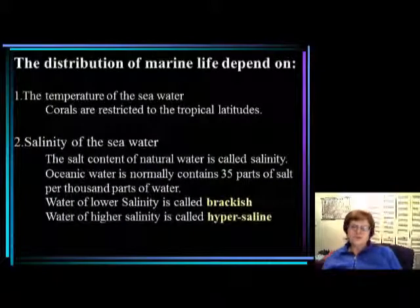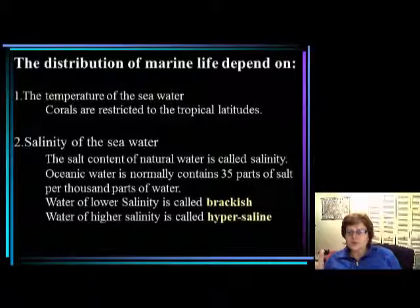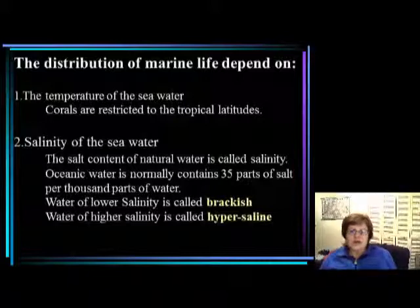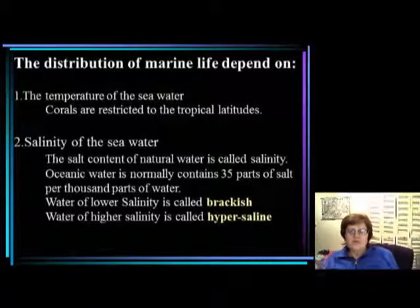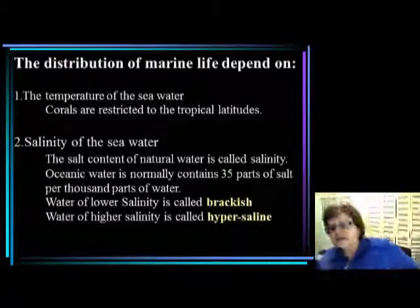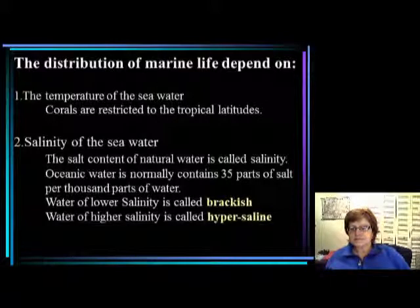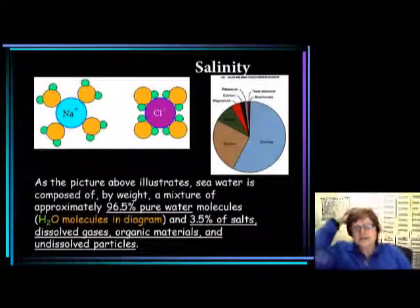The distribution of marine life depends on limiting factors such as temperature. Many marine life habitats belong to different climate zones — corals, for example, can only live in tropical zones. Another limiting factor is the salinity of seawater. The natural salt content of seawater is about 35 parts per thousand, or 3.5%. If salinity is much lower, we call the water brackish; if it's much higher, we call it hyper-saline.